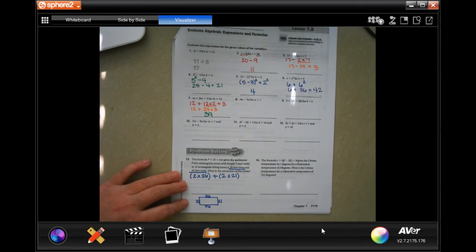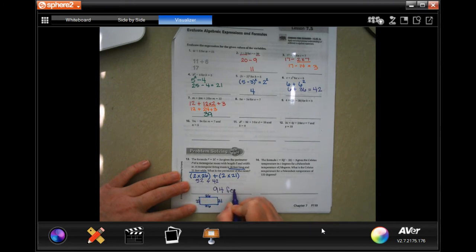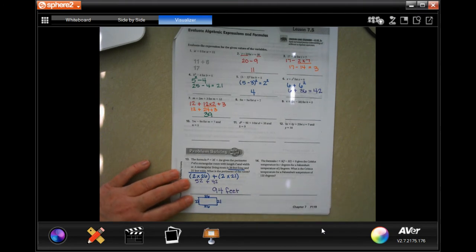So all they're doing is multiplying the 2 sides by 2, each one of them separately, so that they can get how much they're all together for each side. So 2 times 26, well, that's going to be 52. And 2 times 21 is going to be 42. So when I add those two together, 2 plus 2 is 4, and 5 plus 4 is 9, and that's going to be 94 feet.